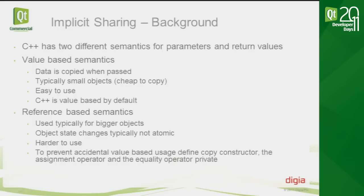C++ is by default value-based — if you don't define copy constructors or assignment operators, the compiler generates them, which is sometimes not what you want. Reference-based semantics is typically used for bigger objects where copying is too expensive, but the developer needs to manage ownership and protect variables from unwanted changes. So what if you could get the benefits of both? The easy use of value-based semantics while still avoiding unnecessary copies — that's what implicit sharing gives you.